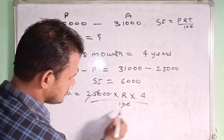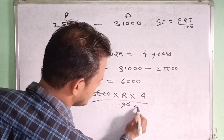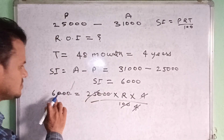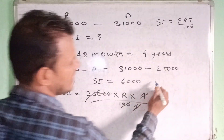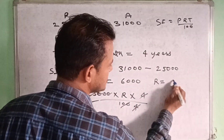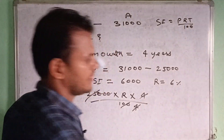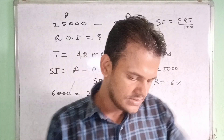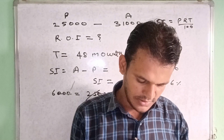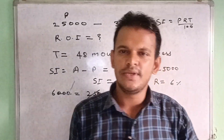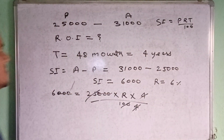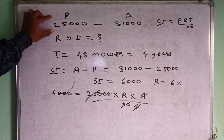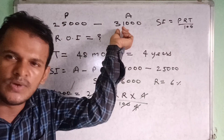After cancelling the zeros and simplifying, 100 and 4 cancel out, giving us R = 6. So the rate of interest is 6% per annum. Option A is the correct answer.